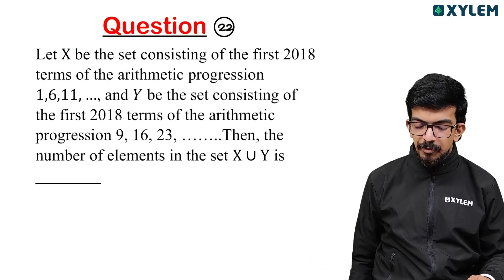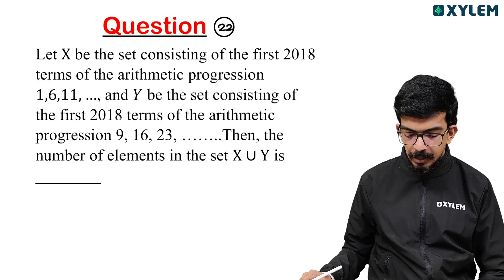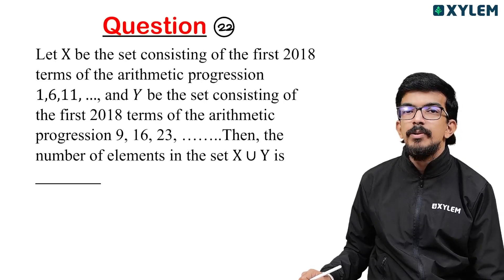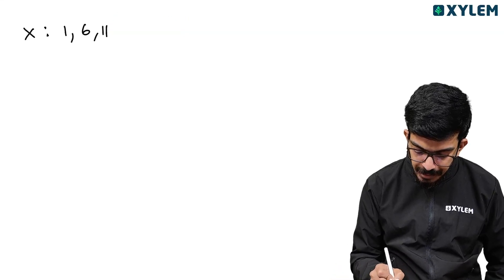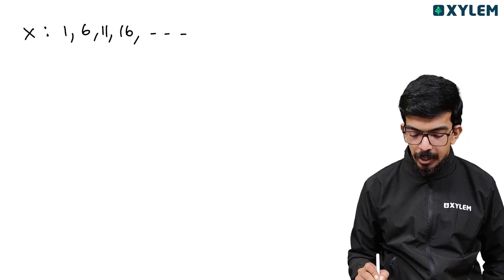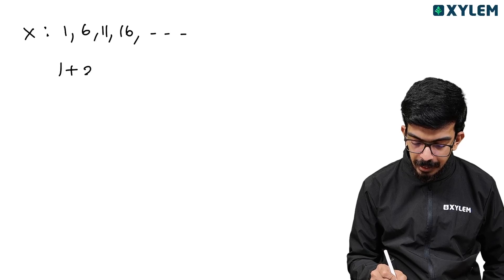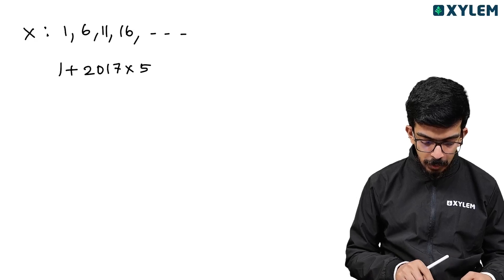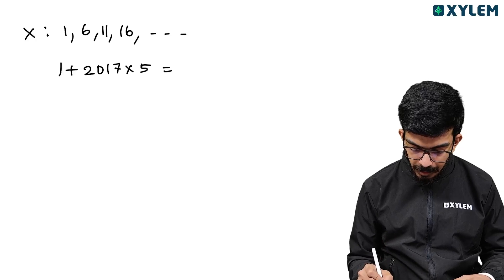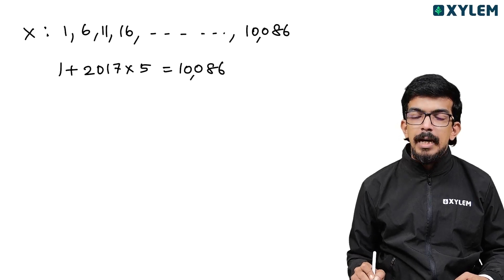Next question. Let X be the set containing the first 2018 terms of the arithmetic progression 1, 6, 11... and Y be the set containing the first 2018 terms of the arithmetic progression 9, 16, 23. We need the number of elements in X∪Y. The last term of X is 1 + (2018−1)×5 = 10086. This is 10086.